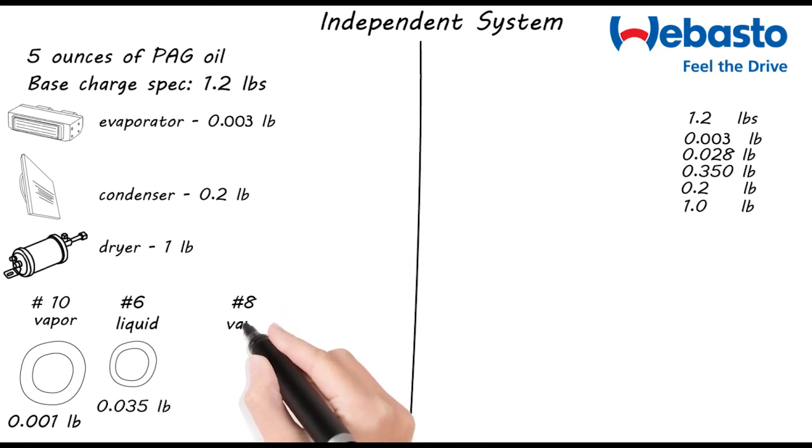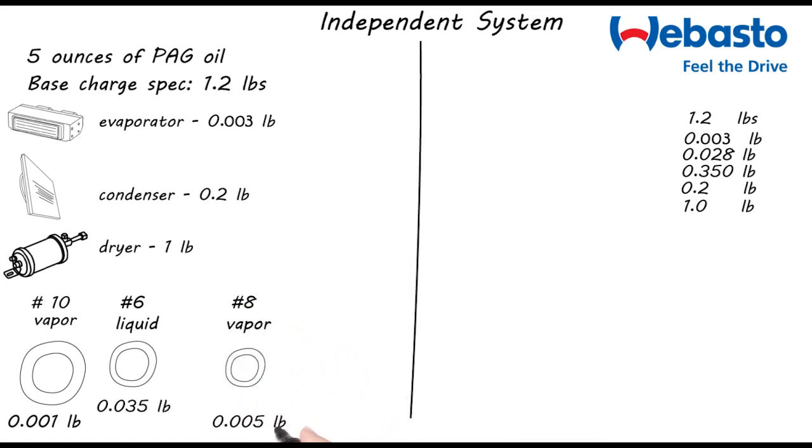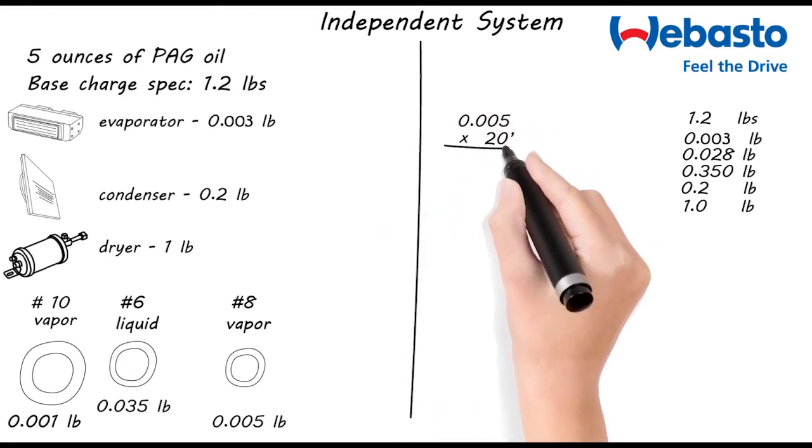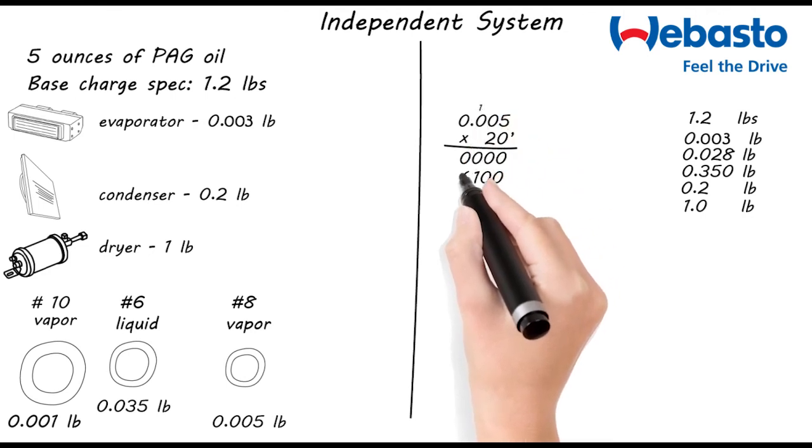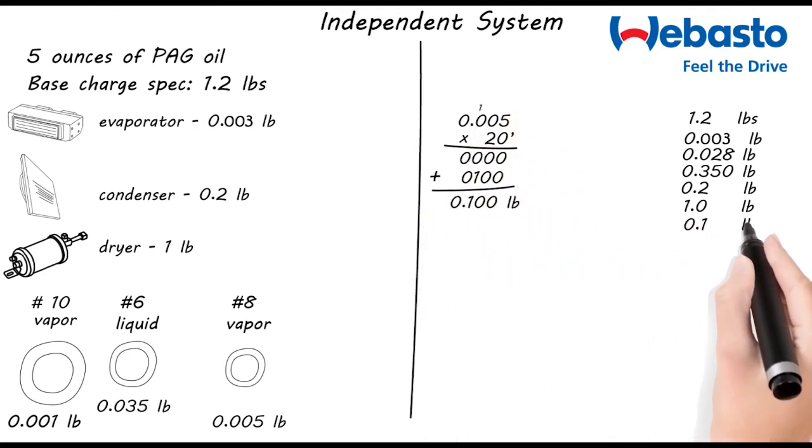Just like last time, we'll have to figure out our refrigerant quantities based on the length of the hose we've installed. We'll add 0.005 pounds of refrigerant per foot of number 8 line on the vapor side. In this example, we installed 20 feet. So the math works out to 0.1 pounds of refrigerant.